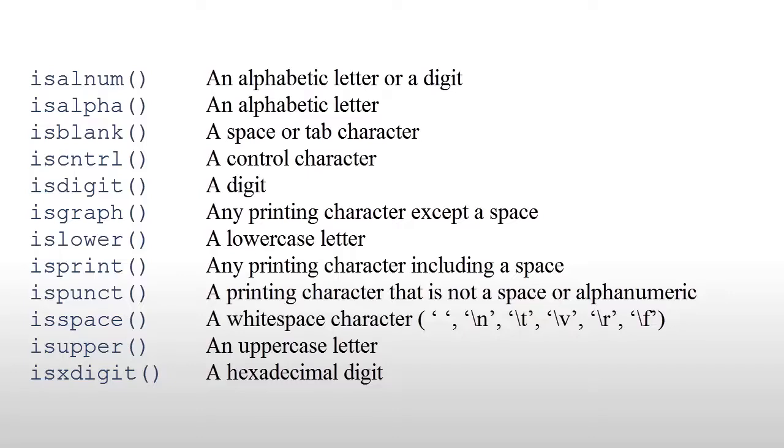isPrint tests for any printing character including a space. isPunct, now this is a printing character that defines punctuation, but it will include characters that you might not normally think of as being punctuation characters in addition to things like commas and full stops. It will also characterize characters such as plus and minuses as punctuation.